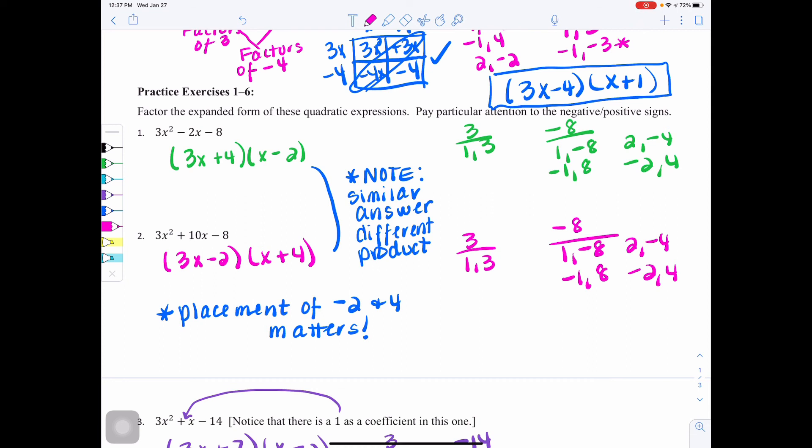So a couple notes I'd like you to add. First of all, the note that you see comparing 1 and 2, note there's similar answer but different products. So be very careful here. There was a slight change. By switching the signs, you can see how the outcome changes. Okay? Also, the placement of the negative 2 and the 4 are going to be important.